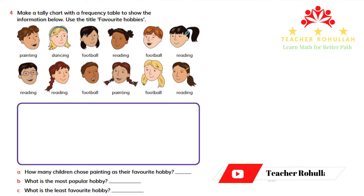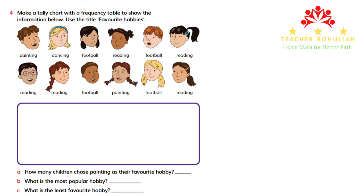Hello and welcome to today's lesson. In this lesson, I'm going to work on question 4 of unit 2.1 of Cambridge Primary Mathematics Learner's Book 3. This unit is about tally charts and frequency tables.